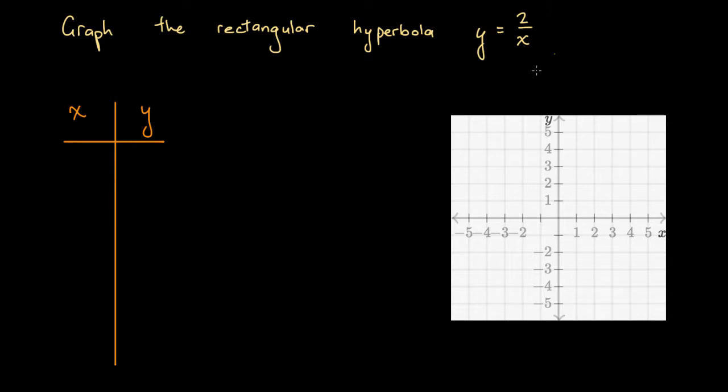And graph the curve represented by this hyperbola. OK, well, let's go ahead and do that. In terms of some values, let's choose minus 2, minus 1, minus 0.5, 0, 0.5, 1, and 2. These seem like appropriate values.